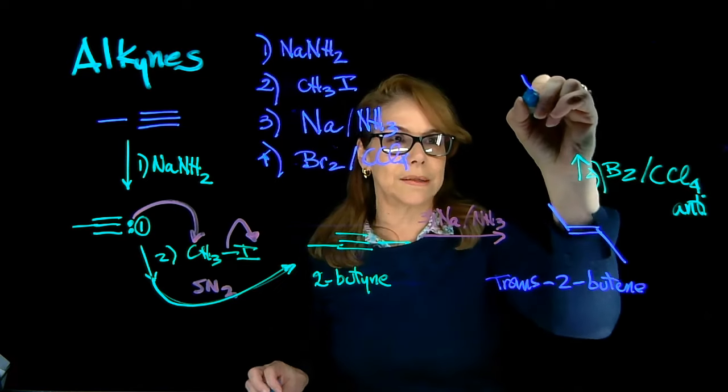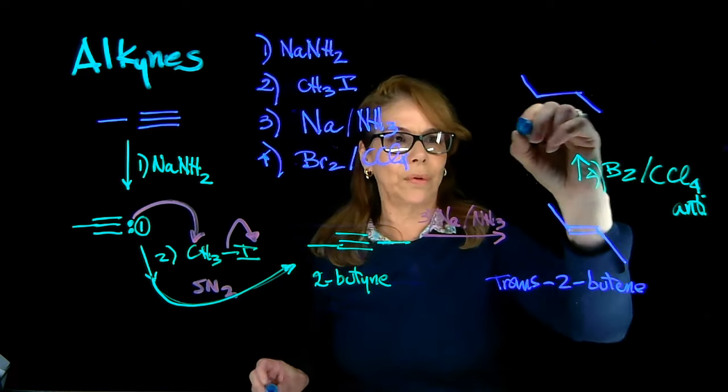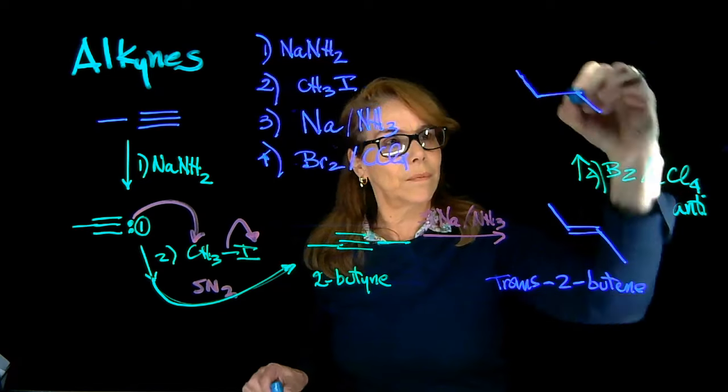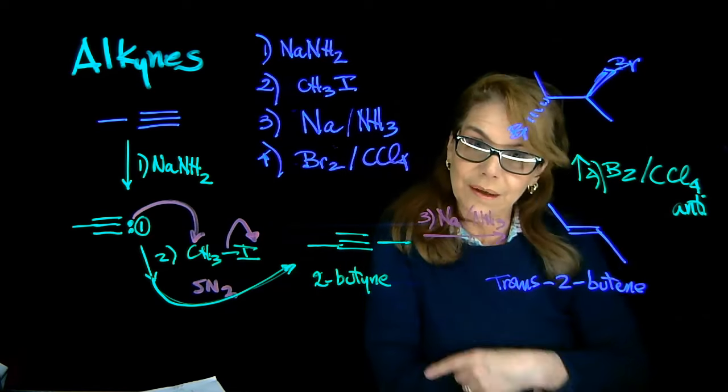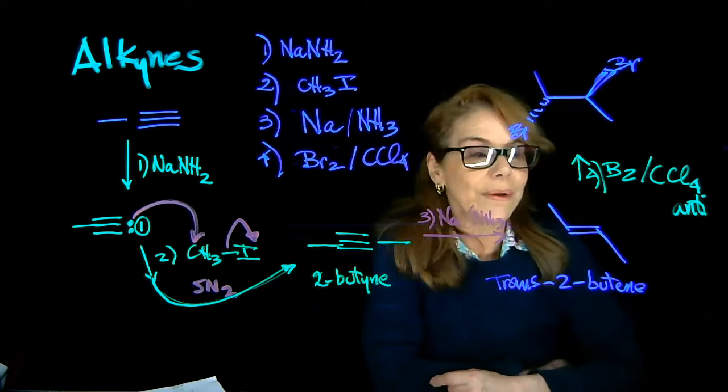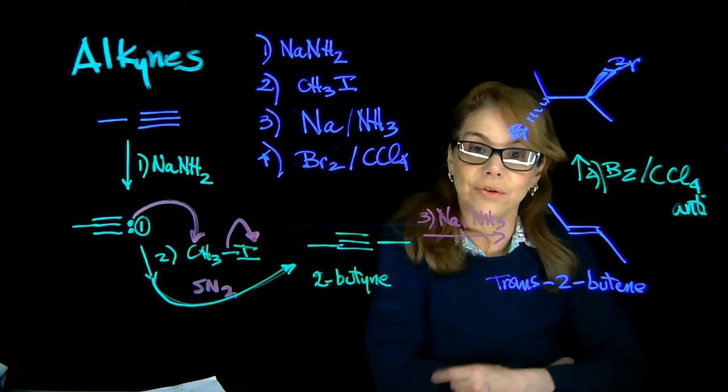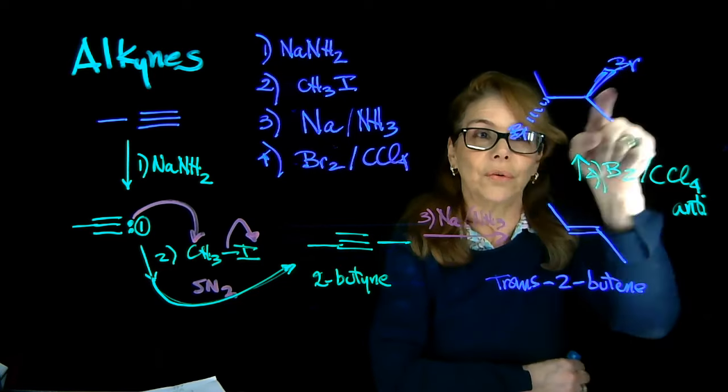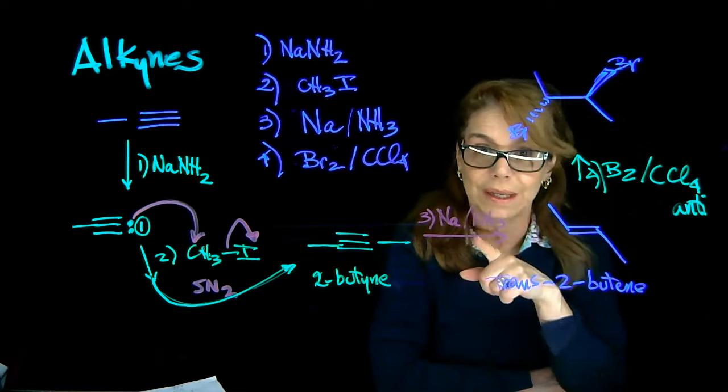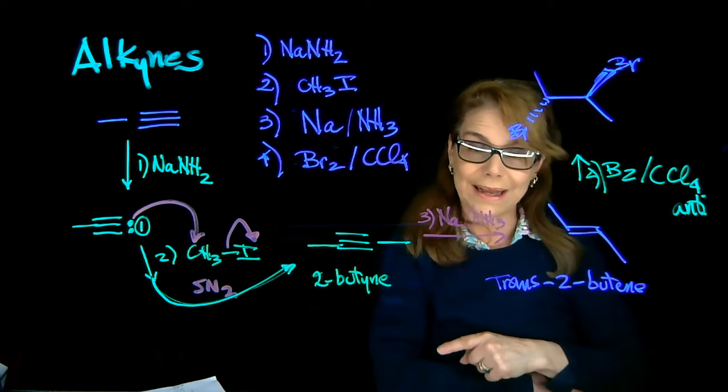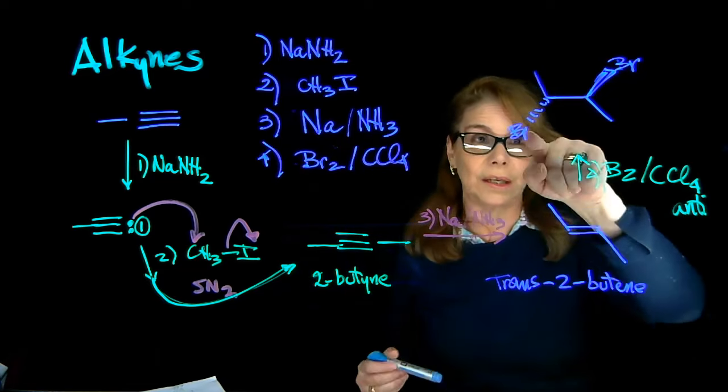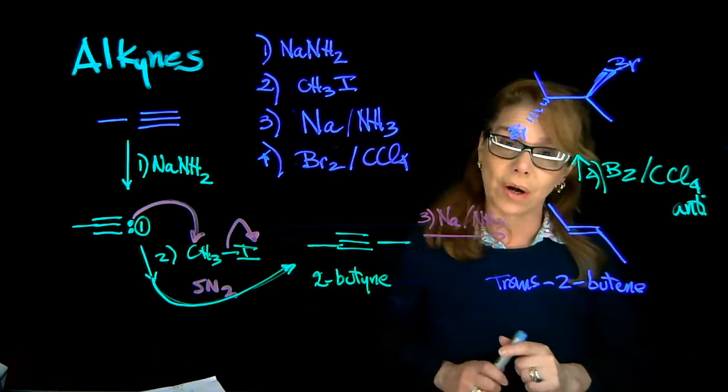So when you add bromine in carbon tetrachloride, let's remember that you're doing that addition in an anti-fashion. What this says is that the two bromine atoms need to be added to opposite sides. So here we see the two methyl groups are trans. So it's a trans-2-butene that the bromine atoms are opposite.